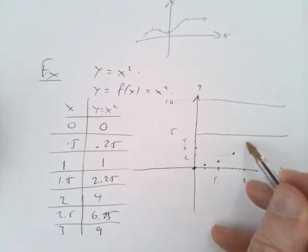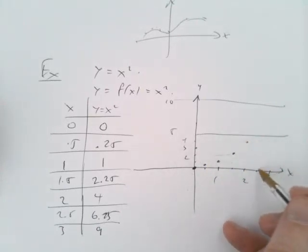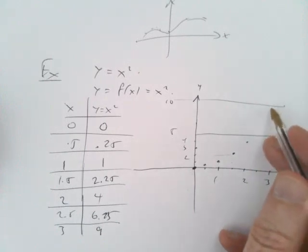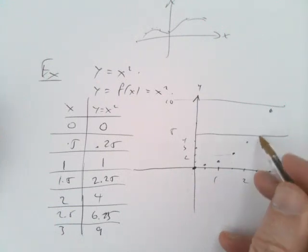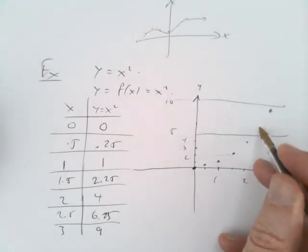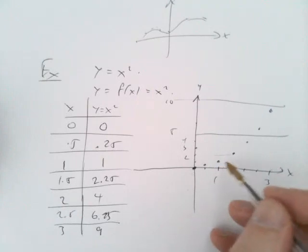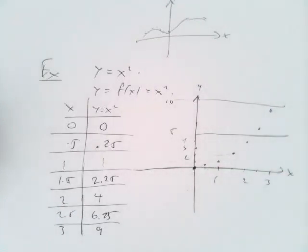2 goes to 4, and then 3 goes all the way to 9, and 2.5 goes to 6.25. And we get some idea of what it looks like.